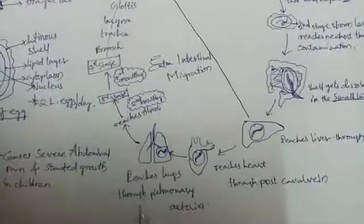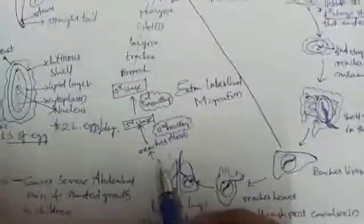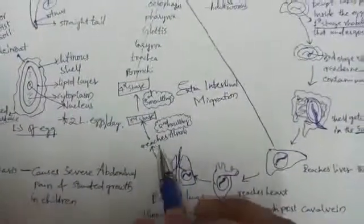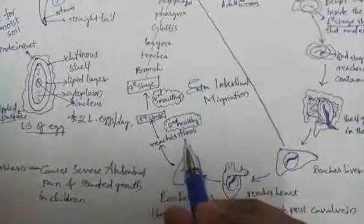It reaches the heart through the postcaval vein and then reaches the lungs through pulmonary arteries.